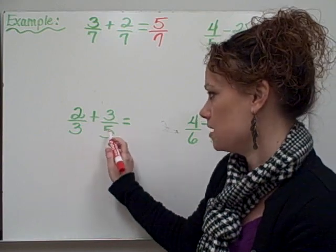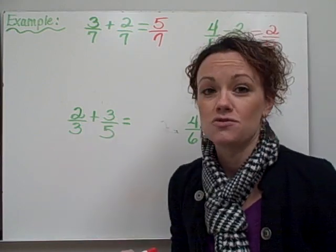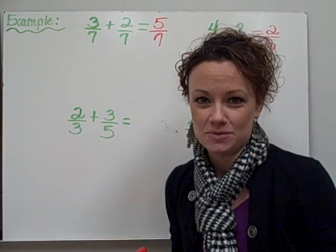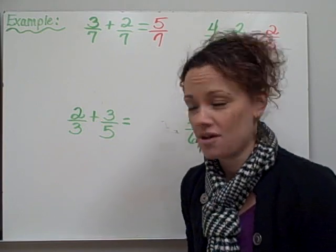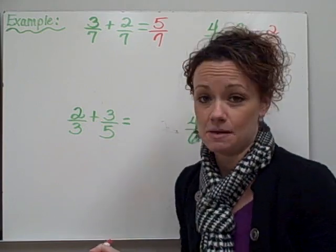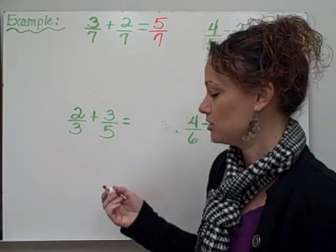Now let's take a look at some of the trickier problems: 2 thirds plus 3 fifths. We notice that our denominators are not the same, so it's our job to make sure that they are the same by creating equivalent fractions.